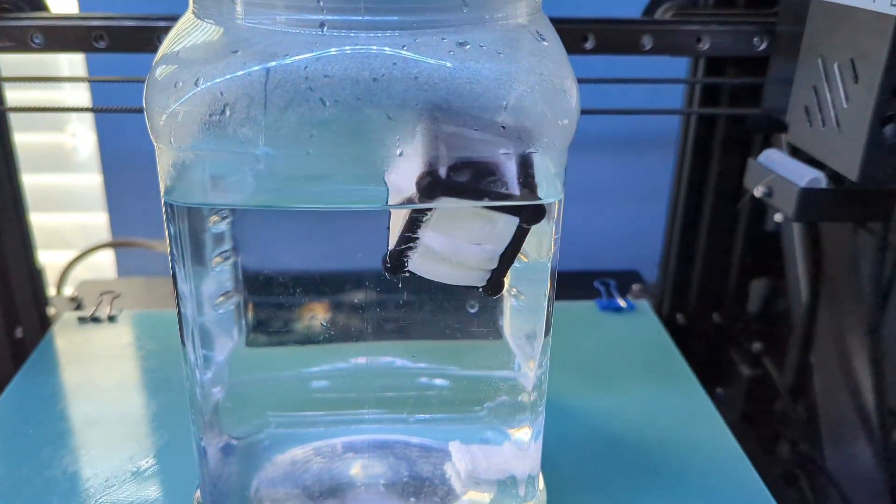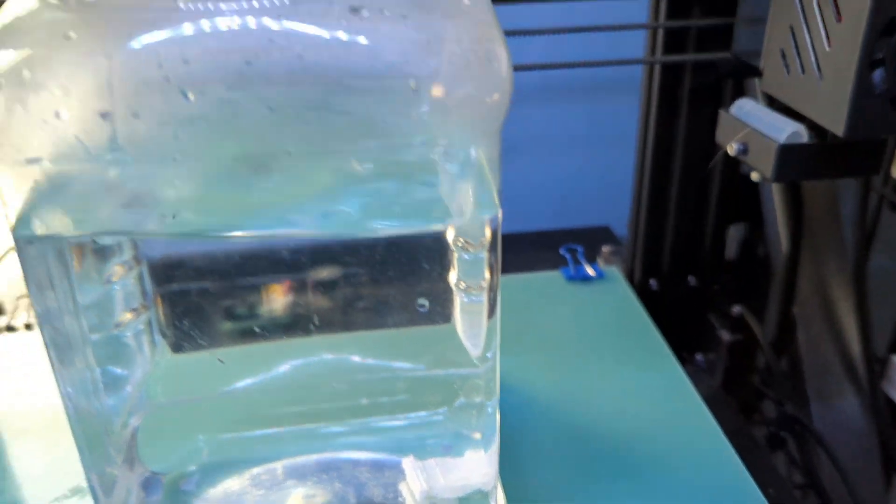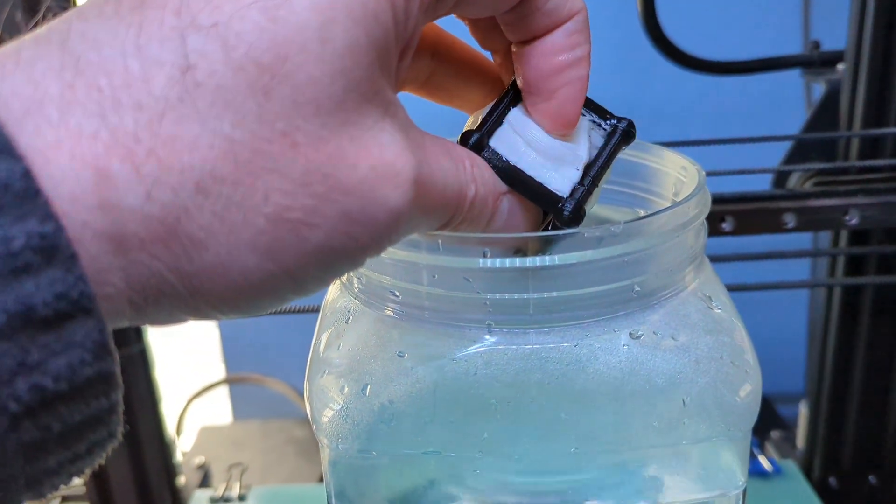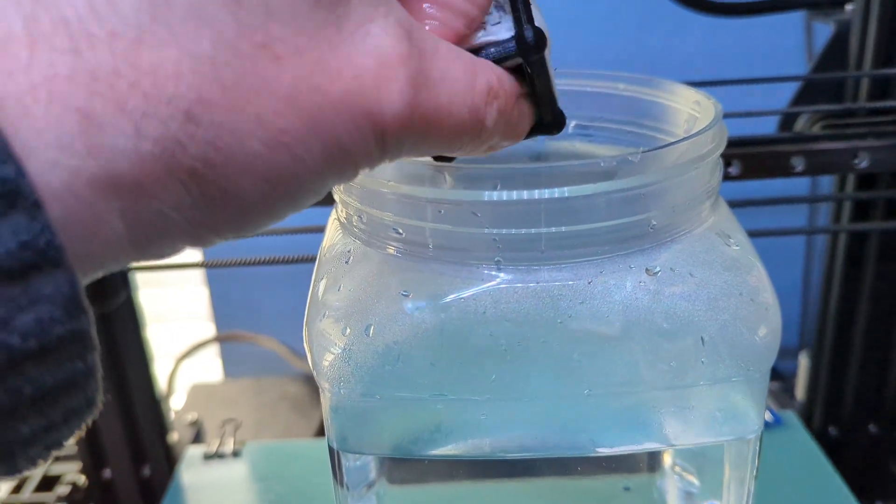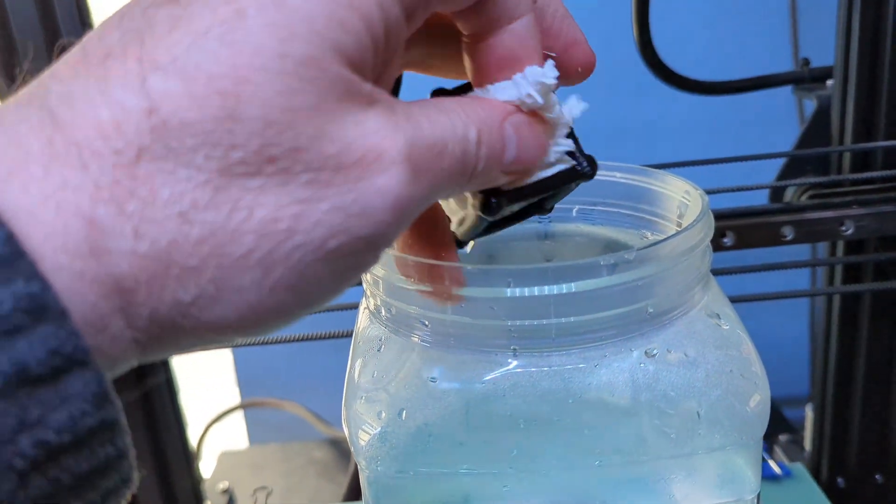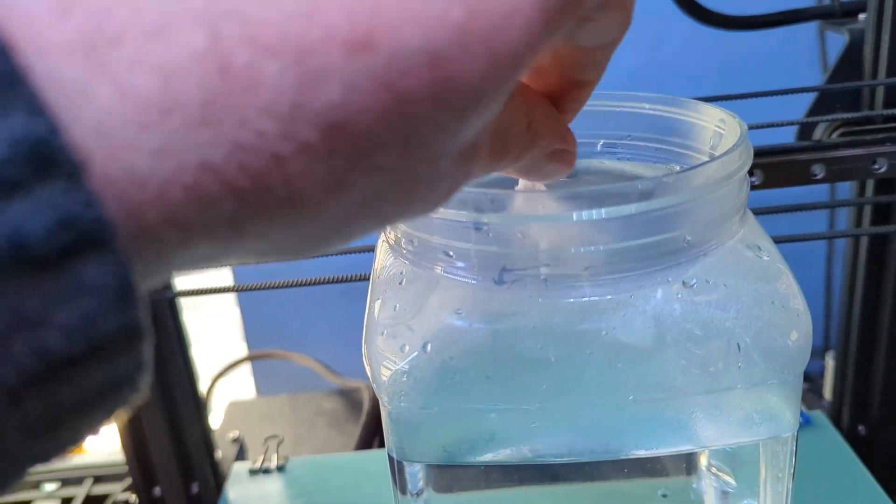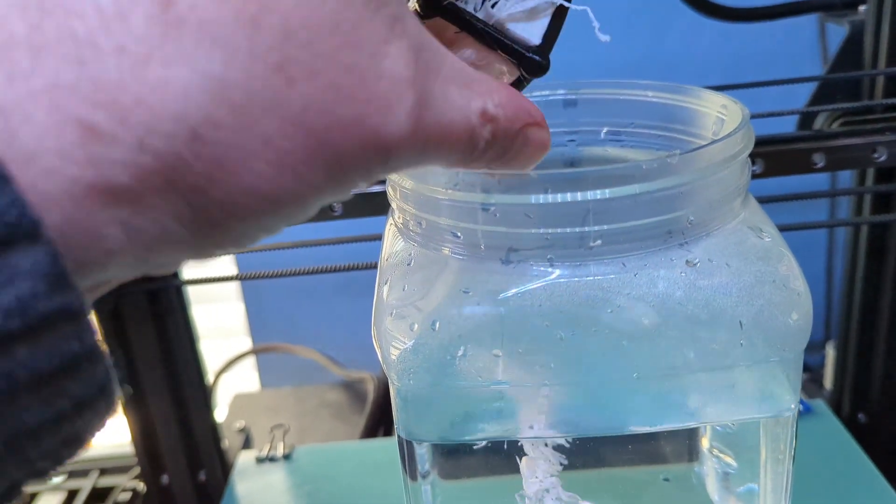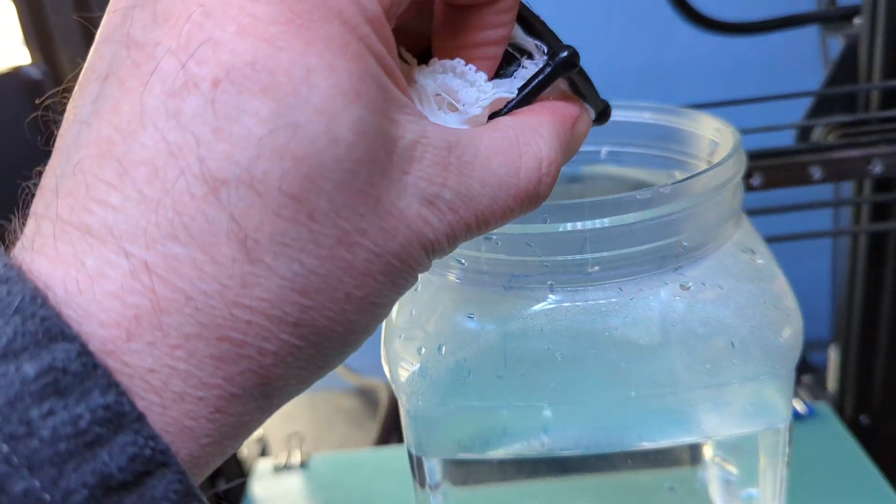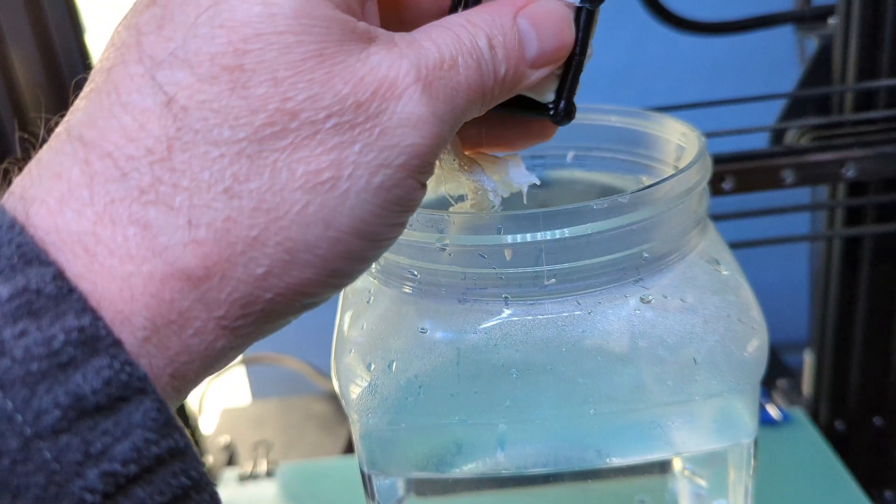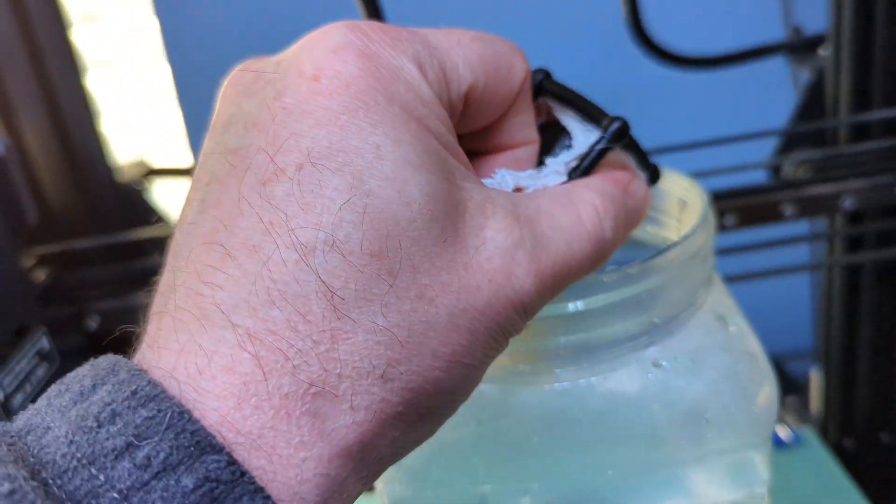So instead of waiting for it to fully dissolve, it's already softened enough so we can actually peel away the supports because PVA does soften but it will eventually dissolve, but it takes a long time. You don't actually have to wait all that long. You just have to wait maybe 45 minutes or so to soften to the point where you can peel away the PVA supports.